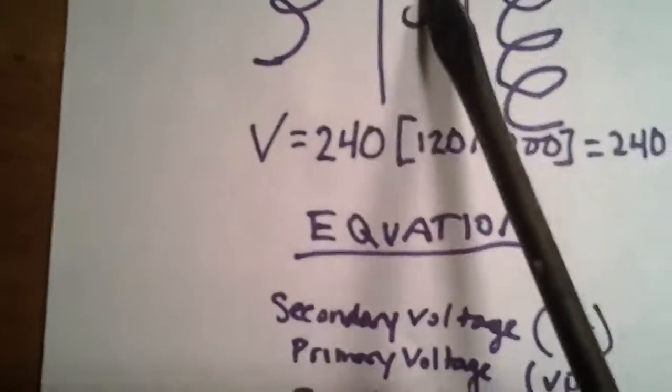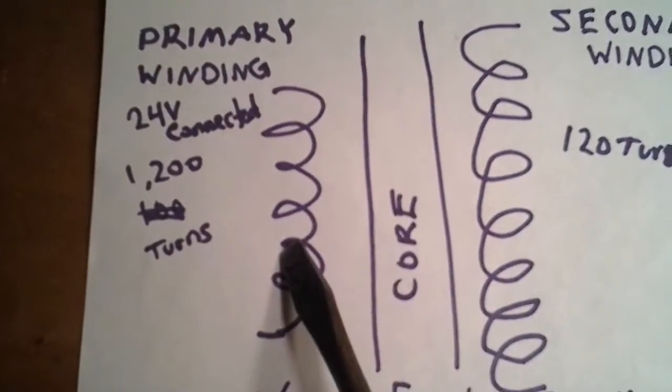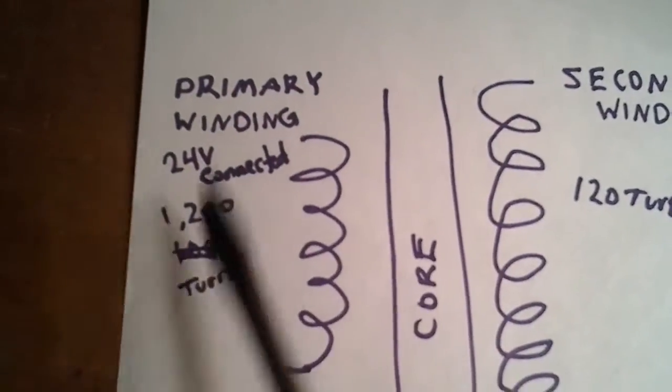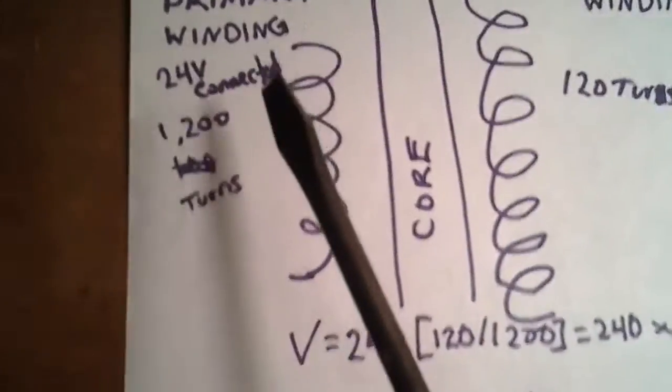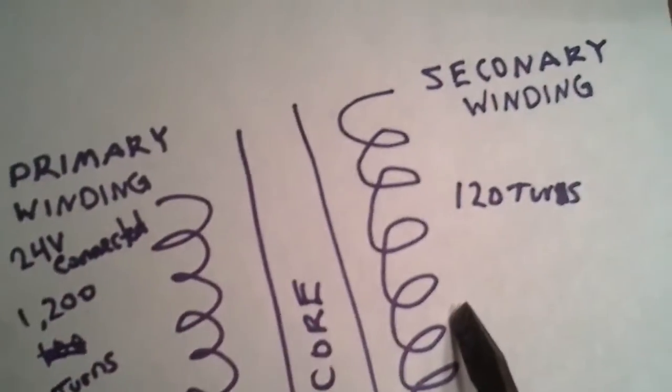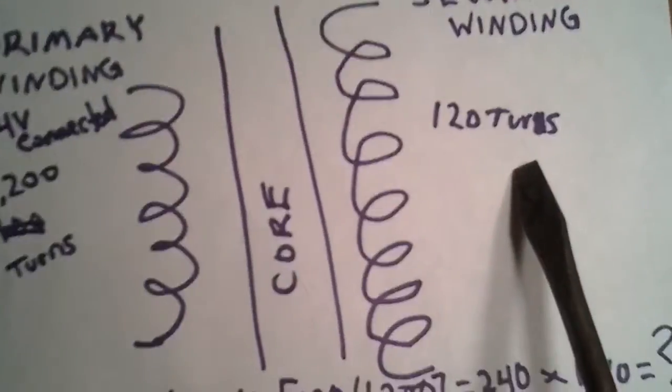The primary winding has 1,200 turns - I'm just using this for an example. The secondary has 120 turns on the secondary winding.